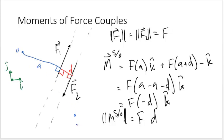What's interesting about this is that we could move point O to any point in the system, and the moment of these forces about another point O would also be F times the perpendicular distance between the two forces. This implies that the magnitude of the moment about any point in this system is F times d and does not depend on the choice of moment center.